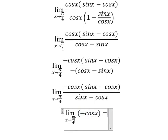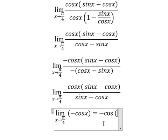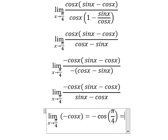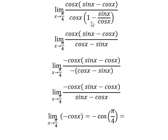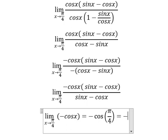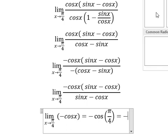We substitute π/4 here, and we have the final answer which is negative square root of two over two.